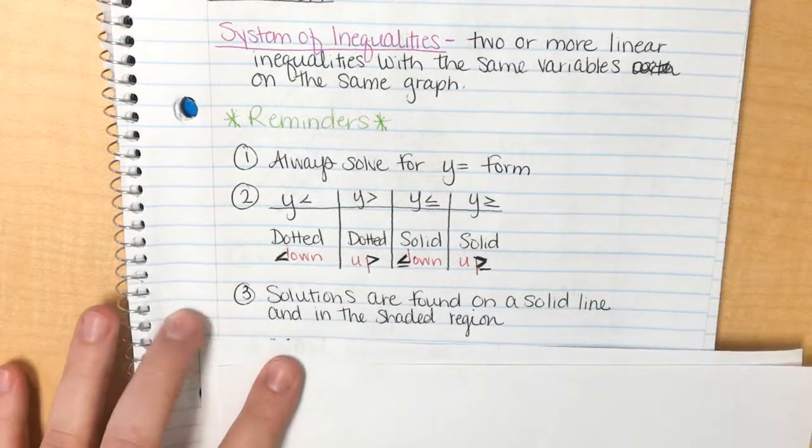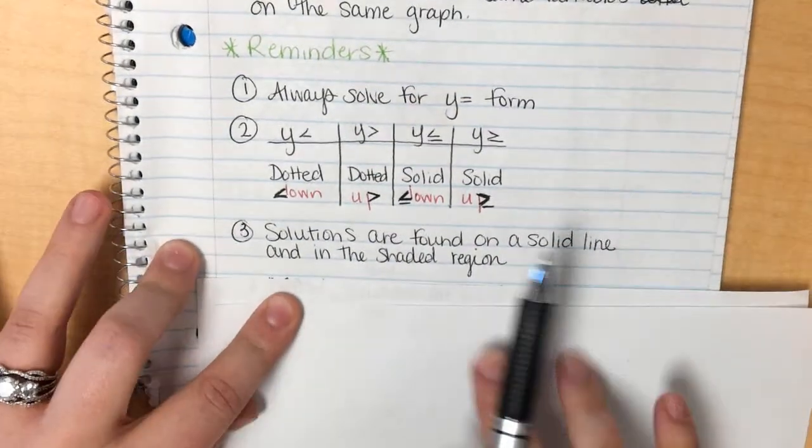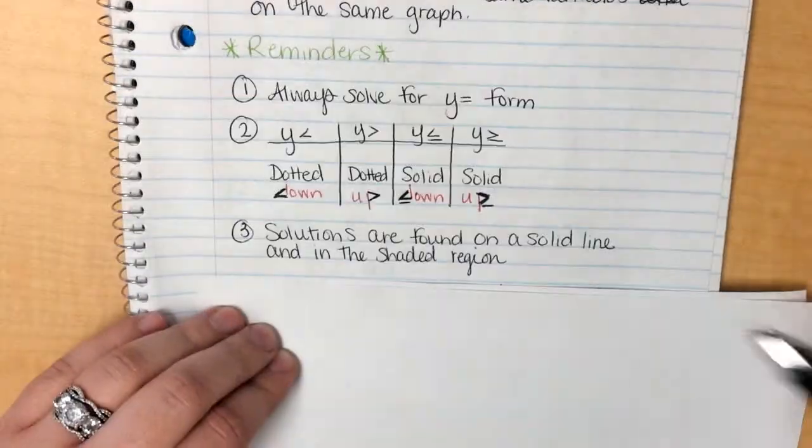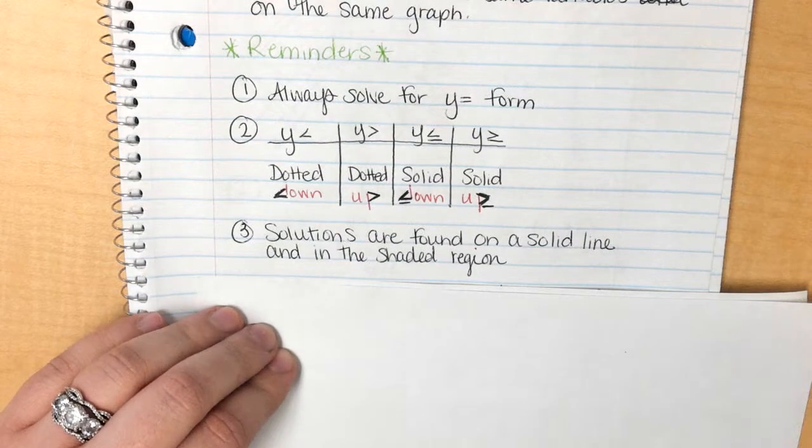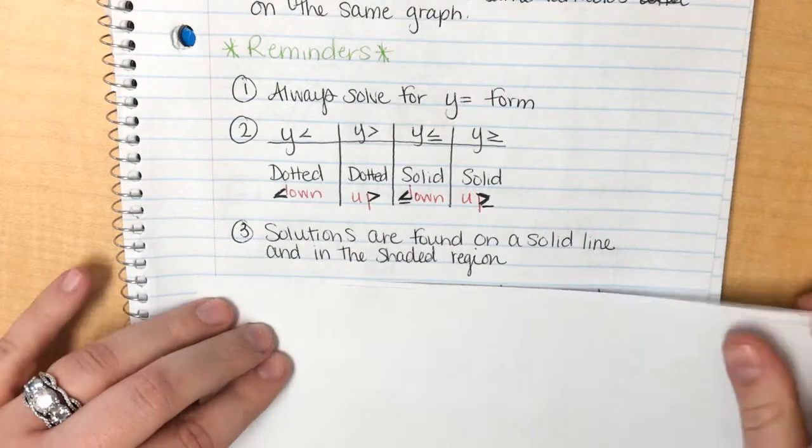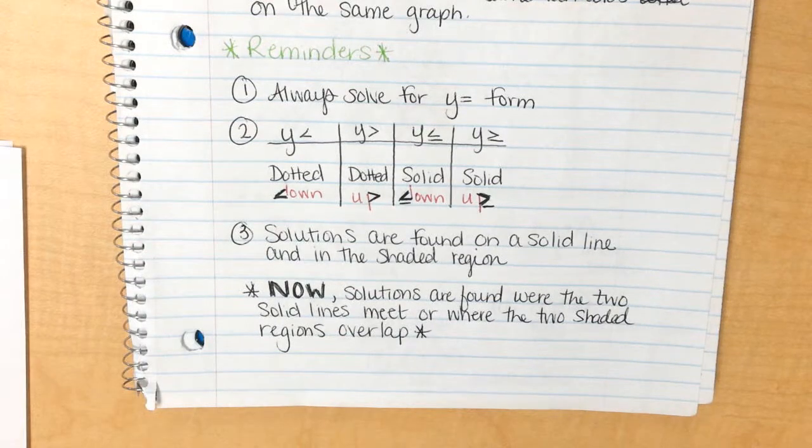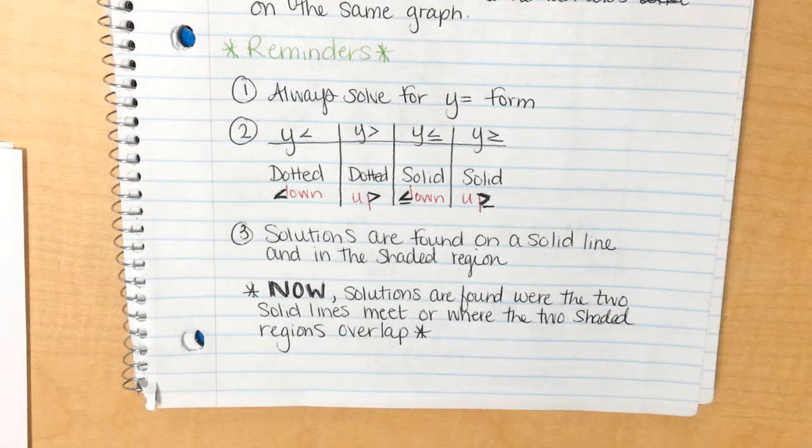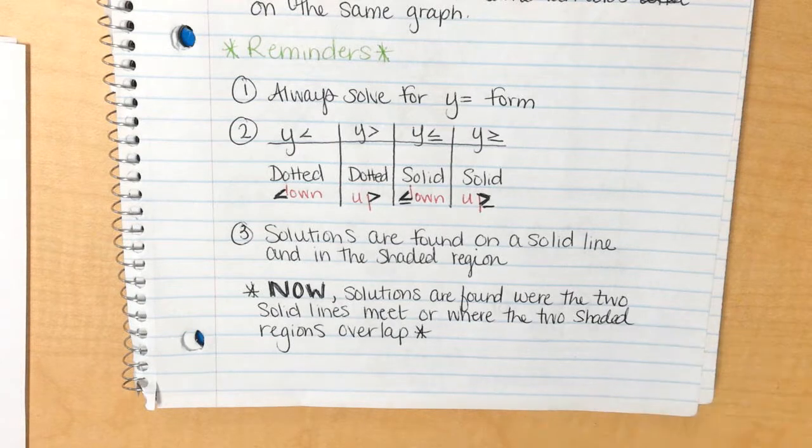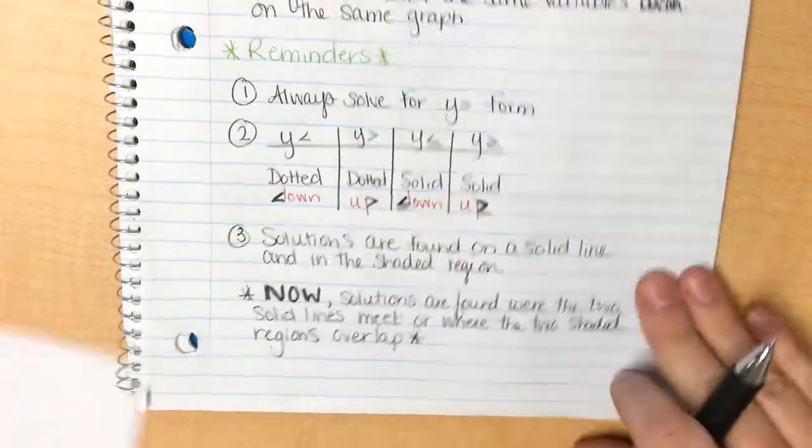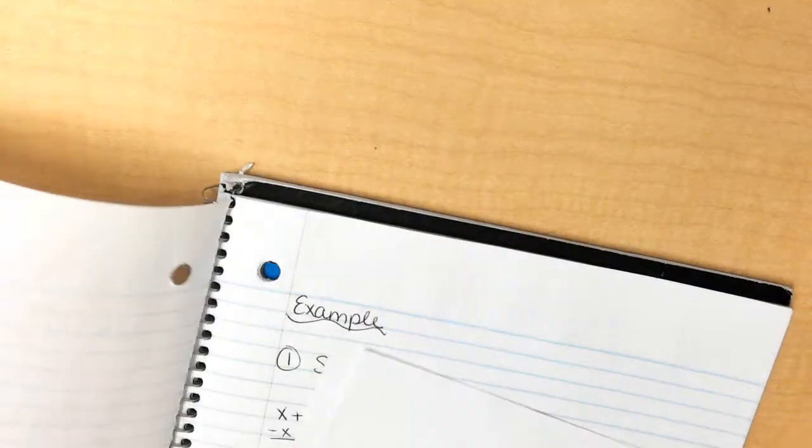Little tidbits to remember. Solutions are found on solid lines and shaded regions. You cannot find solutions on dotted lines. Please don't forget that. Now, the one new thing is solutions are found where both solid lines meet, or where both shaded areas overlap each other. I'll show you an example of that here in just a second.